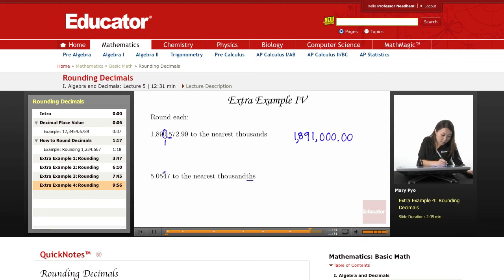I circle it. Look at the number behind it. It's a 7. It's 5 or greater, right? 7 is bigger than 5. That means I change the circled number to a 5. I round up.